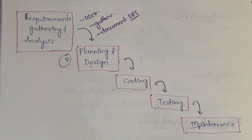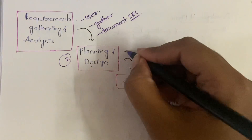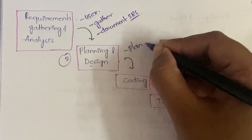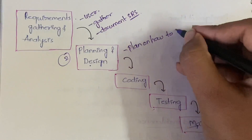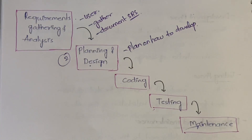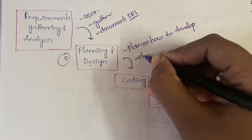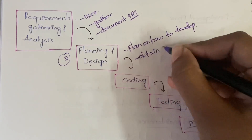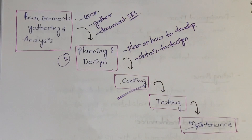The second phase is planning and design. In planning, you plan how to develop the software — which stages, what to do in the first step, second step, and so on. You develop a plan with all the steps involved. Then in design, you obtain a design — you follow that design when you are doing the coding phase.